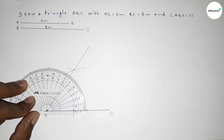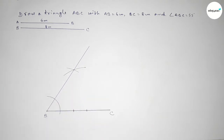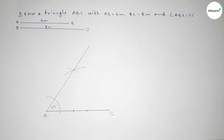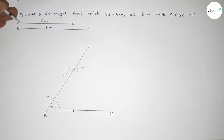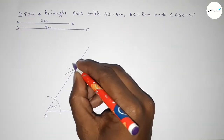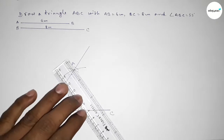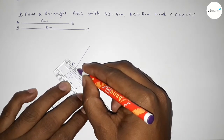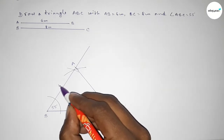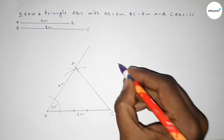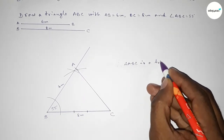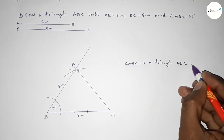Joining this line to get the 55 degree angle. Checking the angle — this is perfectly 55 degrees. Now taking length AB equal to 6 centimeters using the compass, placing it and marking point A. Next, joining A and C to complete triangle ABC. This side is 8 centimeters and this side is 6 centimeters.